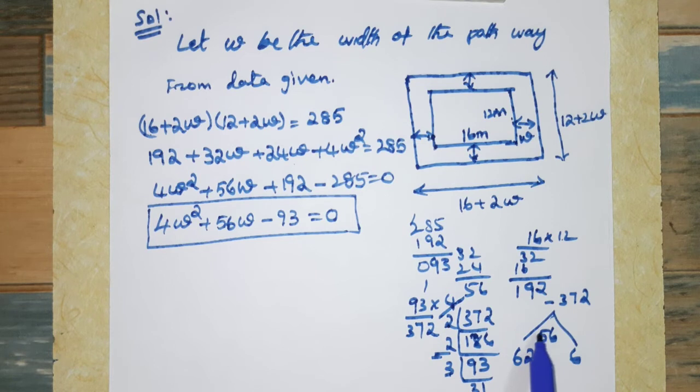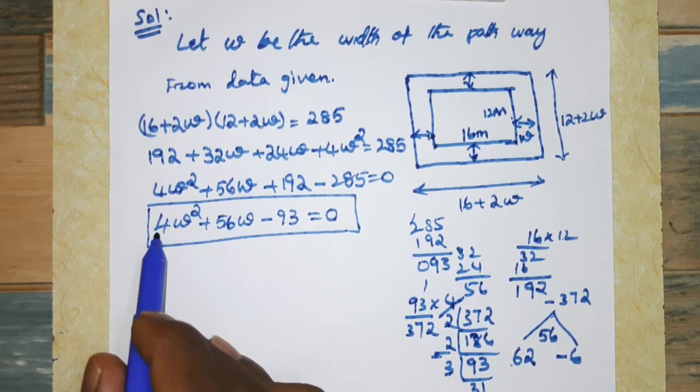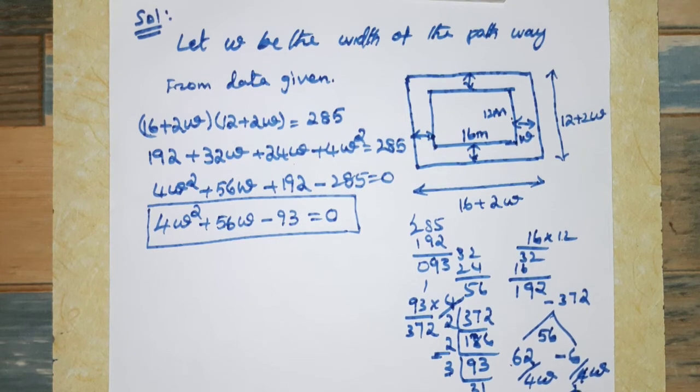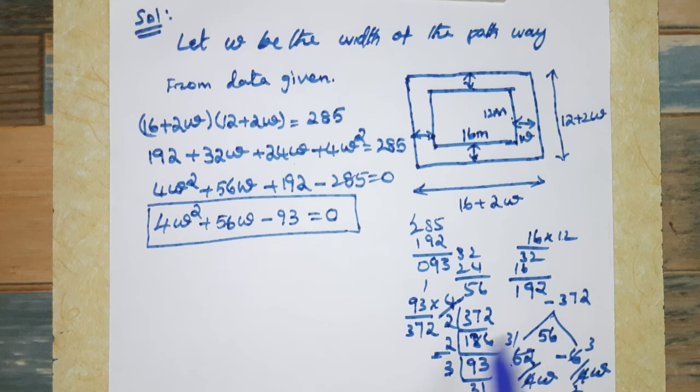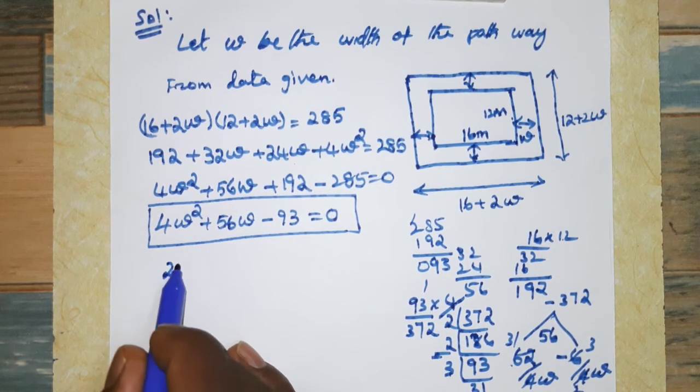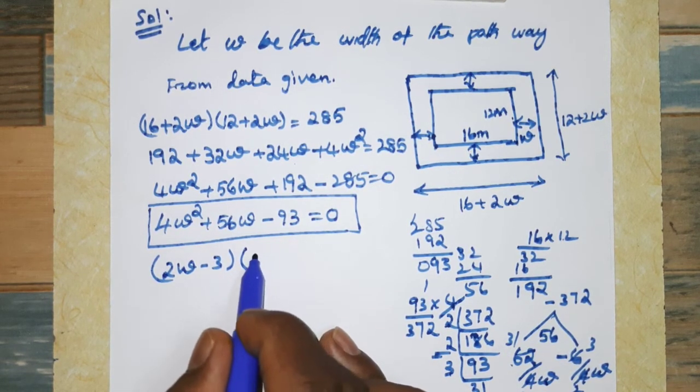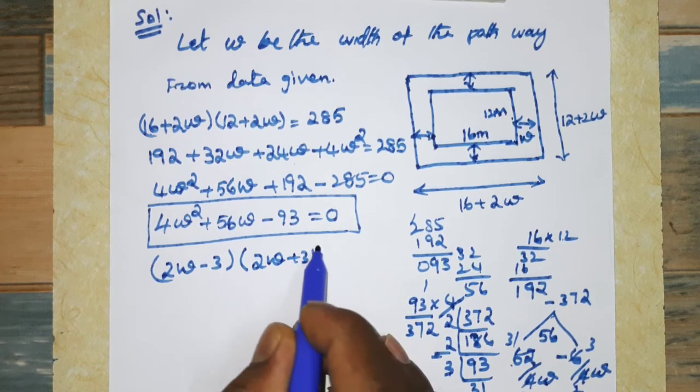The two numbers are 62 and -6. Now factoring: we split 56W as 62W - 6W. Dividing by 4W, we can factor as (2W - 3) times (2W + 31) = 0.